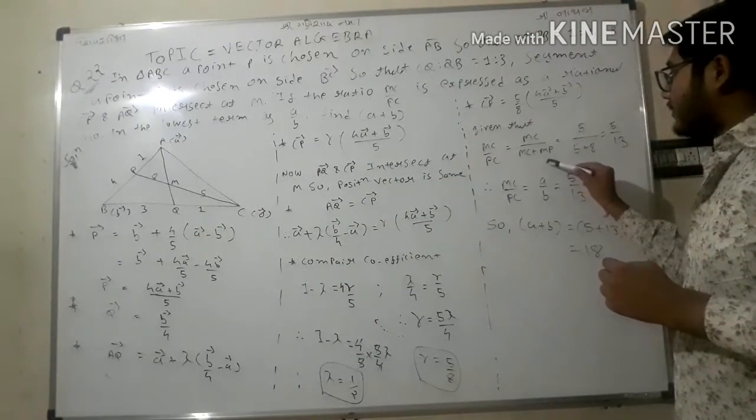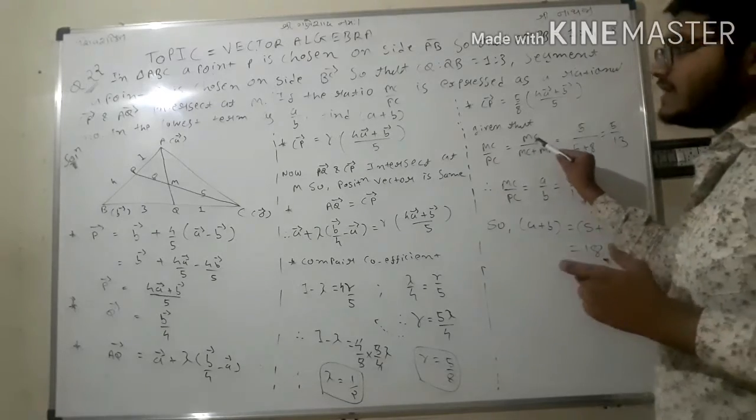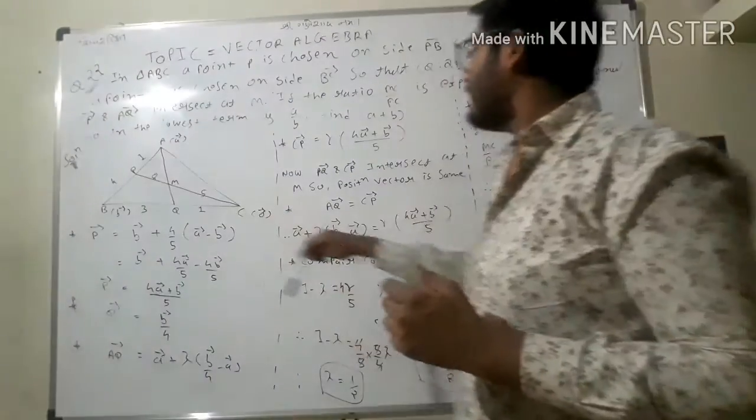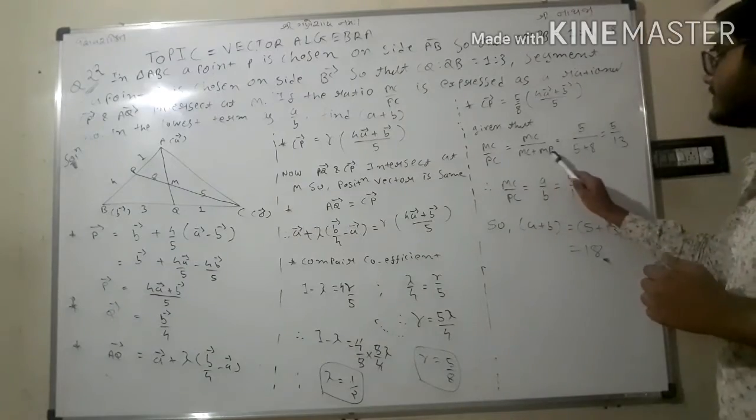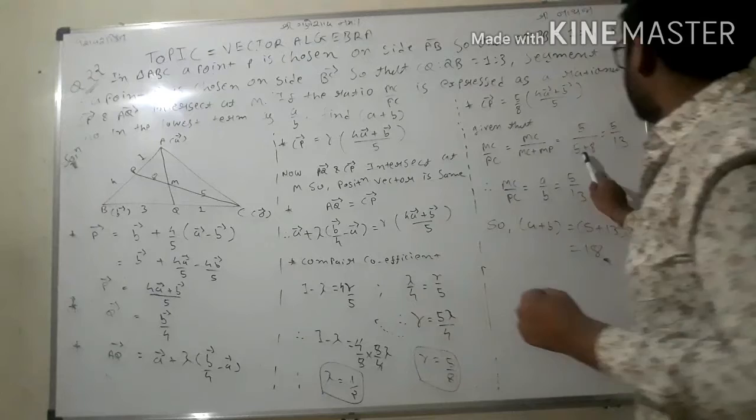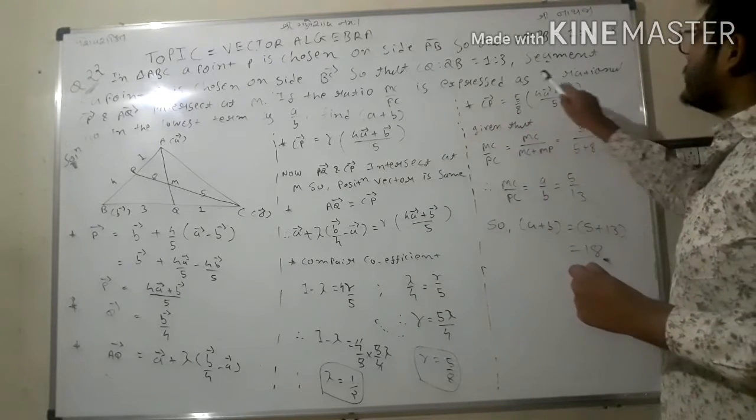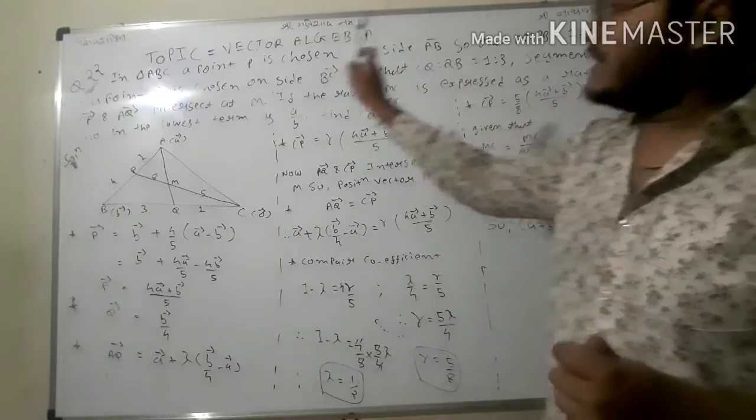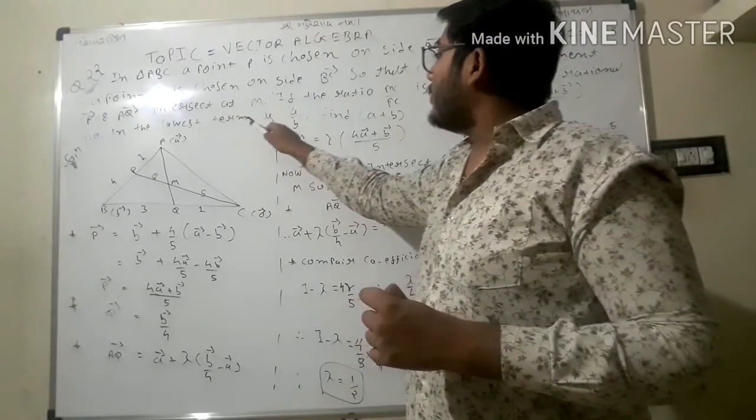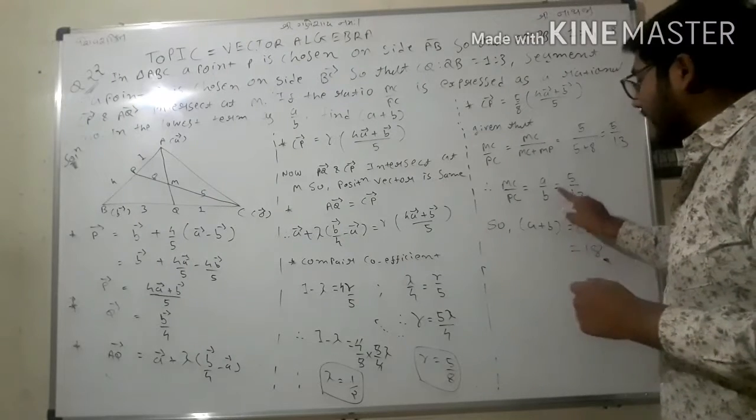What is the value of MC? I am dividing by 5. So MC upon (MC plus MP) equals 5 upon 13. This ratio is expressed in the rational number lowest term a upon b, so a upon b equals 5 upon 13.